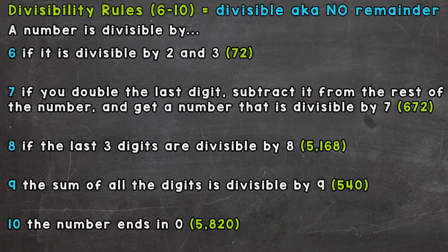So for example, 12 is divisible by 3. We can do 12 divided by 3, that equals 4, and we don't have a remainder.